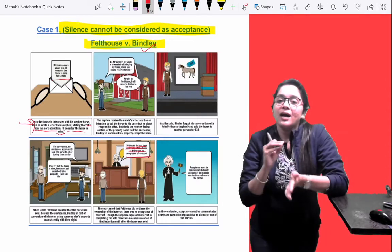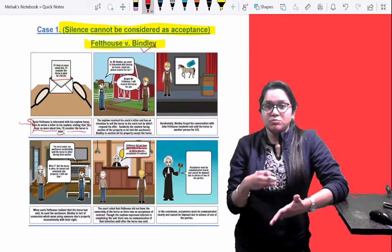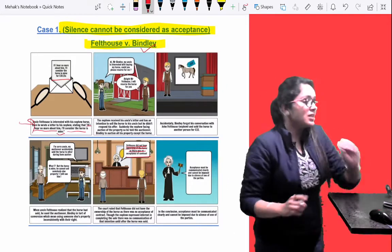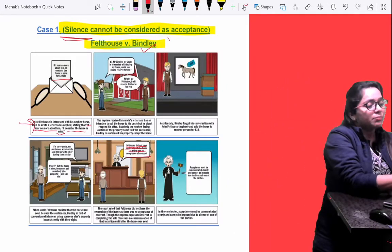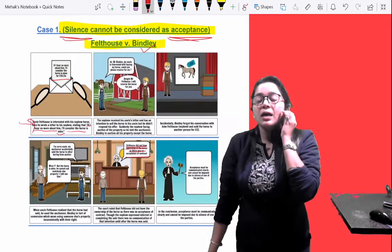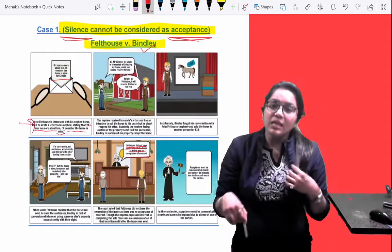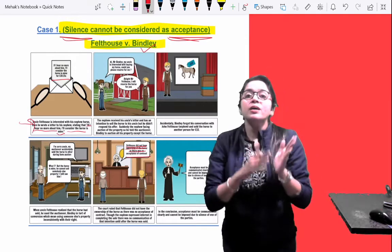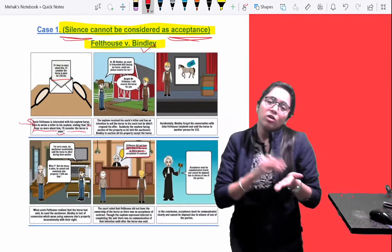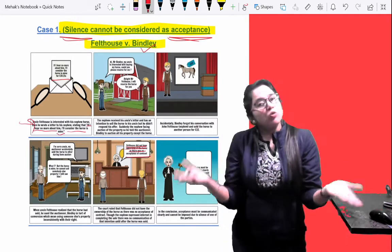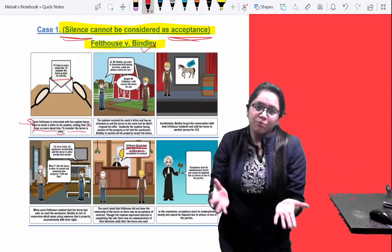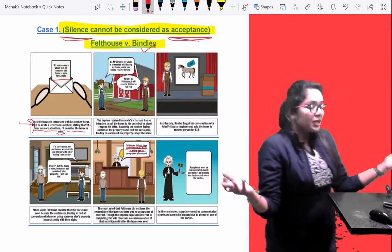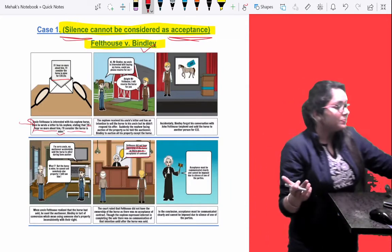The case was filed - Felthouse filed the case against Windel. The judgment came when the court examined the letter. The letter mentioned silent acceptance. The court ruled that silence can never be treated as acceptance. Unless you have actual acceptance, either implied or expressed acceptance, we do not treat silence as acceptance. And if there is no acceptance, then there is no contract between uncle and nephew. So Windel was free to sell the horse.